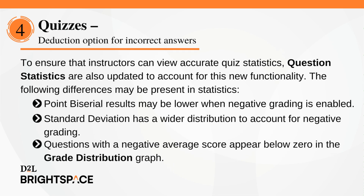To ensure that instructors can view accurate quiz statistics, question statistics are also updated to account for this new functionality. The following differences may be present in statistics: point-by-serial results may be lower when negative grading is enabled; standard deviation has a wider distribution to account for negative grading; and questions with a negative average score appear below zero in the grade distribution graph.